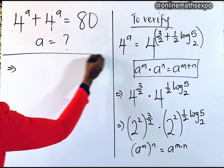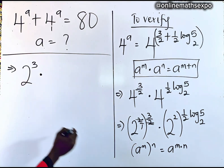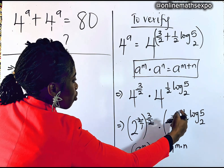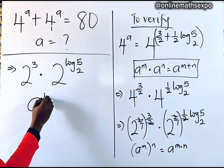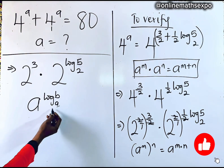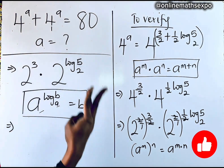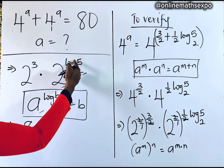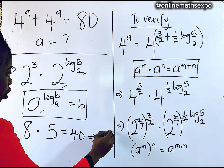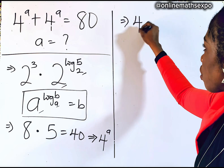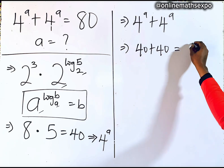Applying this: the 2 in the denominator cancels, leaving 2 to the power of 3, multiplied by 2 to the power of log 5 base 2. Now remember, for every A to the power of log B base A, where the two bases are the same, it equals B. So 2 to the power of log 5 base 2 equals 5. We have 2 cubed — which is 8 — multiplied by 5, giving us 40. Returning both terms: 4 to the power of A plus 4 to the power of A is 40 plus 40, which equals 80. So X equal to 3 over 2 plus one-half log 5 base 2 is absolutely correct.